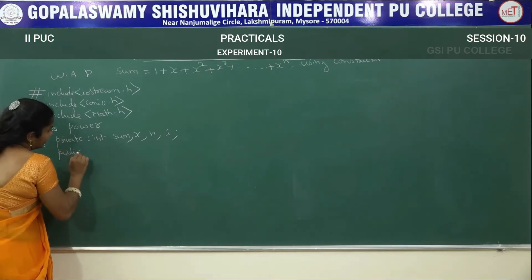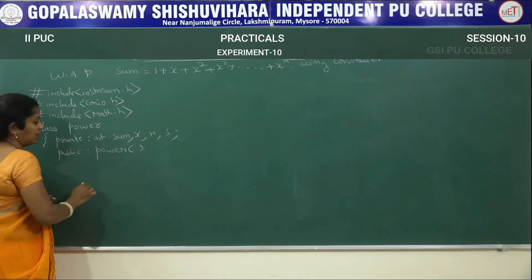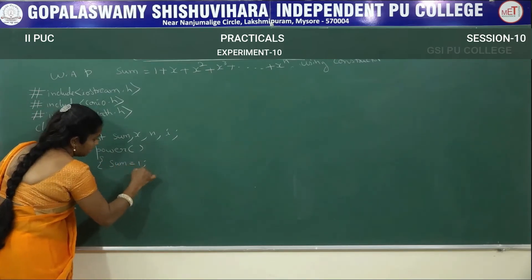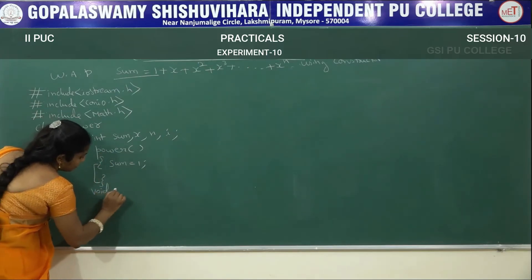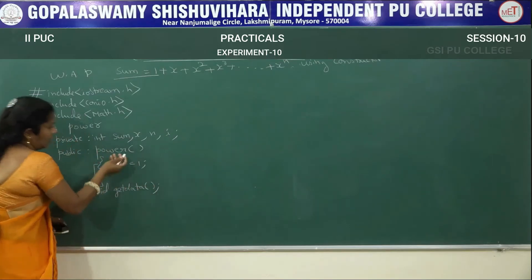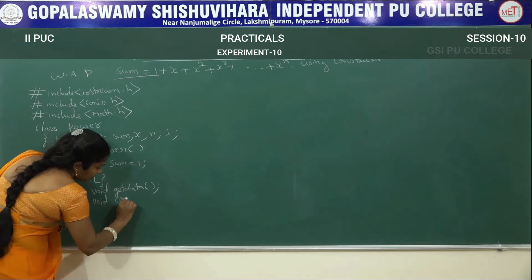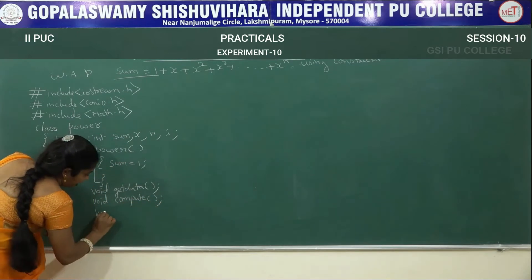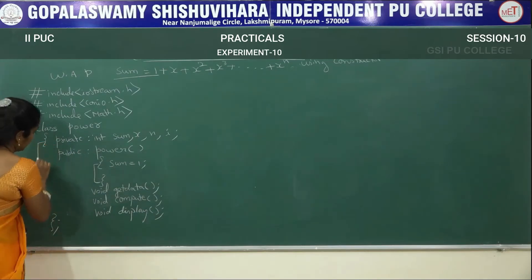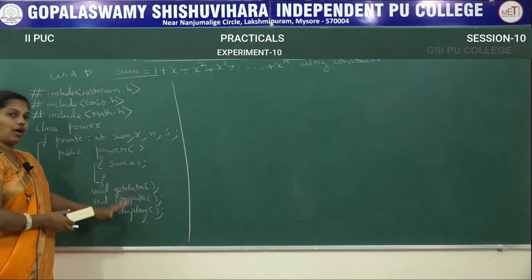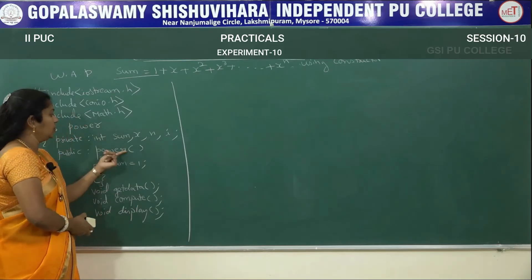In the public section we are declaring the functions. First function is the default constructor function — class name as well as function name are same: 'power'. Inside this, I am initializing sum equals 1. Then void getdata function, void compute function, and void display function. Finally close the class. In total we have 4 functions: power (constructor), getdata, compute, and display — these 3 are regular functions.